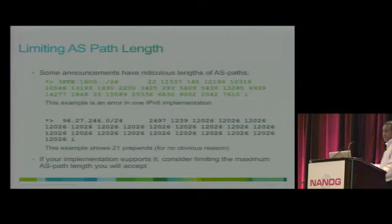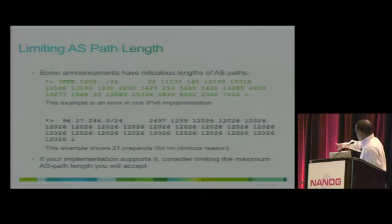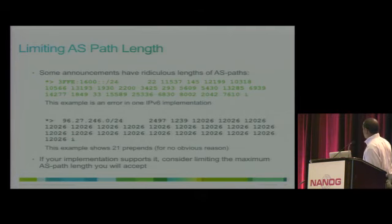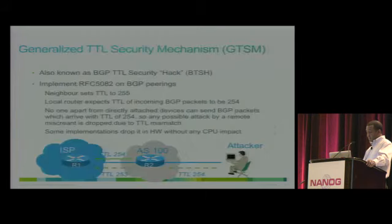Here's an example of ridiculously long AS path lengths. In this case, one AS path is actually unique — no prepend. The next one is a prepend. Another does just three unique AS hops — the unique AS path length is three, but it's been prepended so many times that it reaches 12 or 26. You can limit the maximum AS path length received.